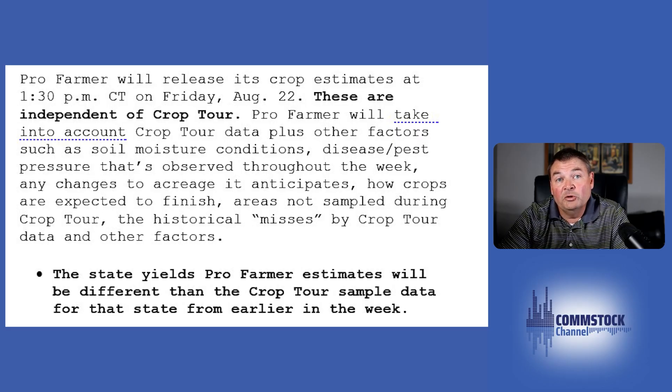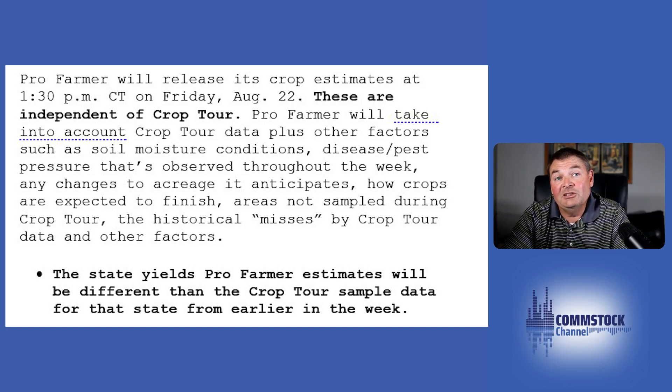Pro Farmer will do a yield estimate for soybeans for all seven states. As I mentioned, there is no yield calculation within the crop tour data itself. That's largely because it takes a different number of pods to make a bushel in each of those seven states sampled during crop tour. Now that I've run through how stops are made, how you get the data, and the difference between crop tour data and the Pro Farmer estimates at the end of the week, I think it's important to hear what tour leaders expect heading into crop tour this year.